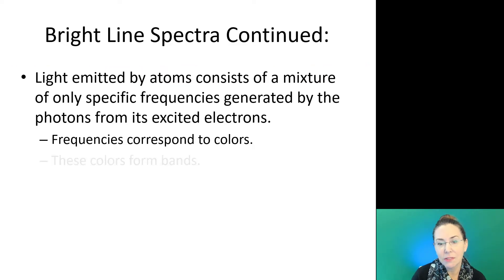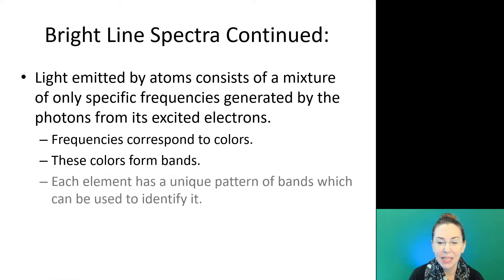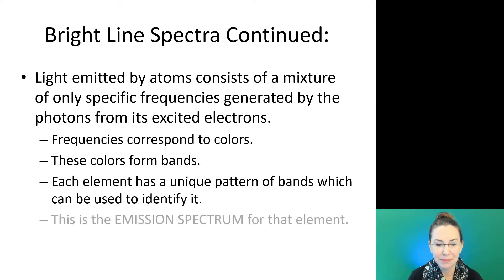These frequencies of light correspond to specific colors. When we're looking at a bright line spectrum, these colors form bands that we can see. Each element has a unique pattern of bands which can be used to identify it. In fact, sometimes the bright line spectra for an element is known as its electron fingerprint or its atomic fingerprint. We often call this the emission spectra for that element.